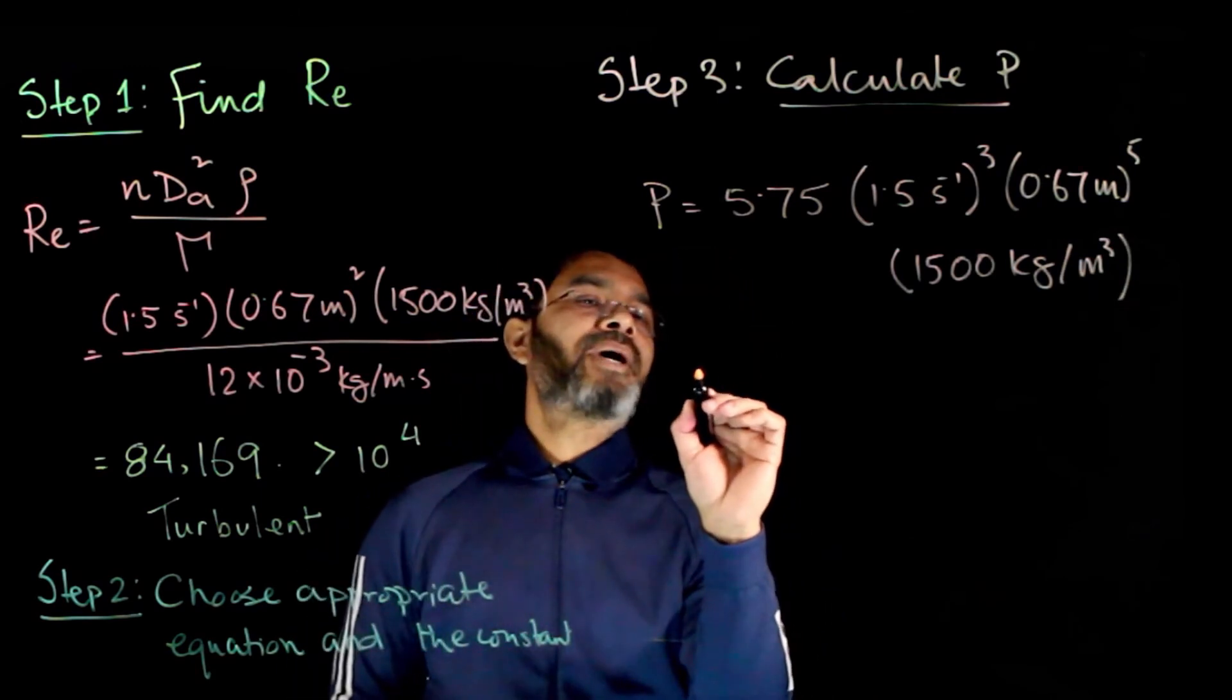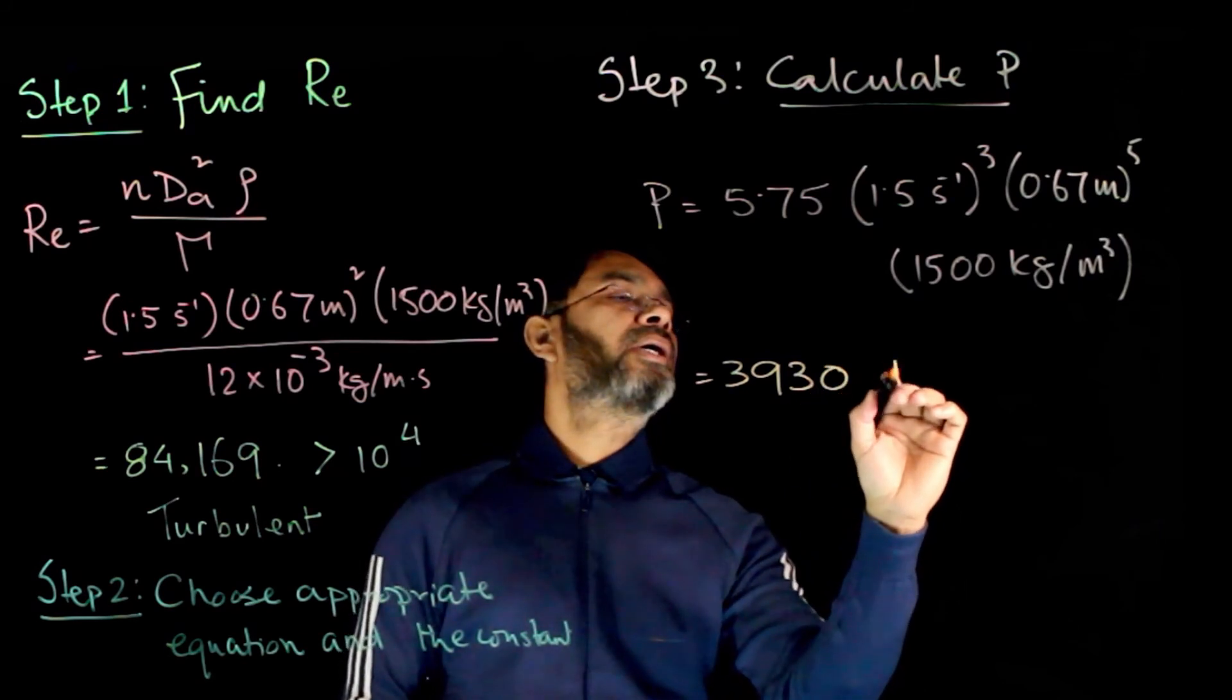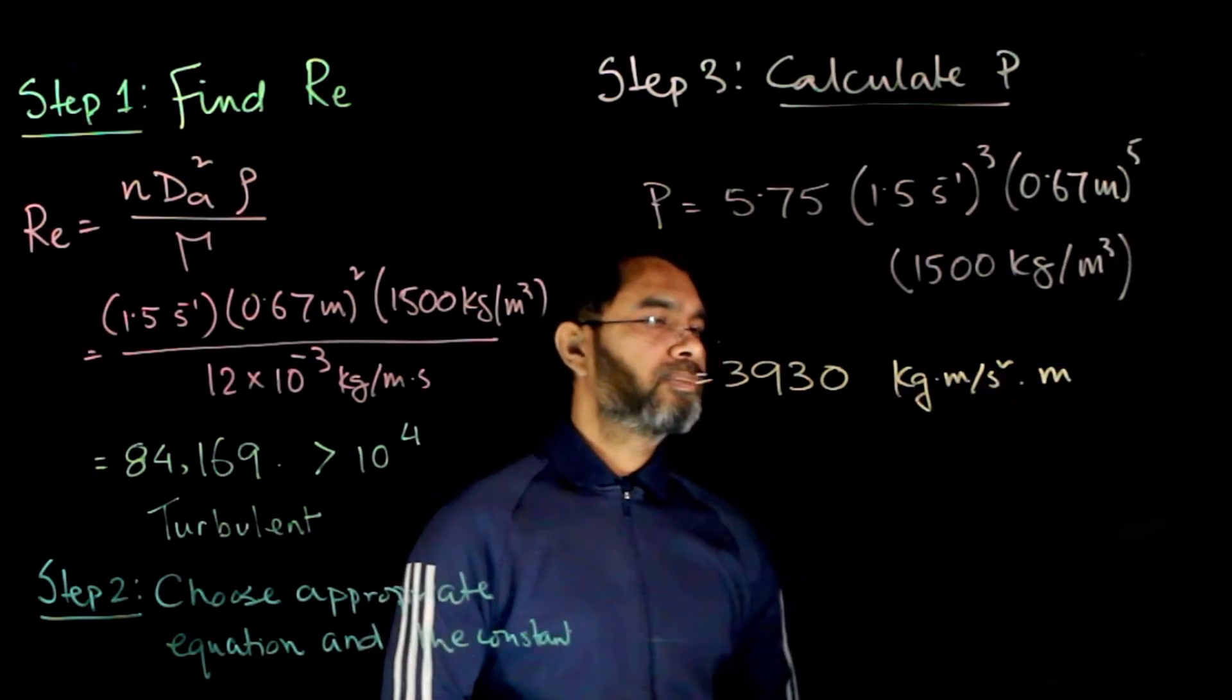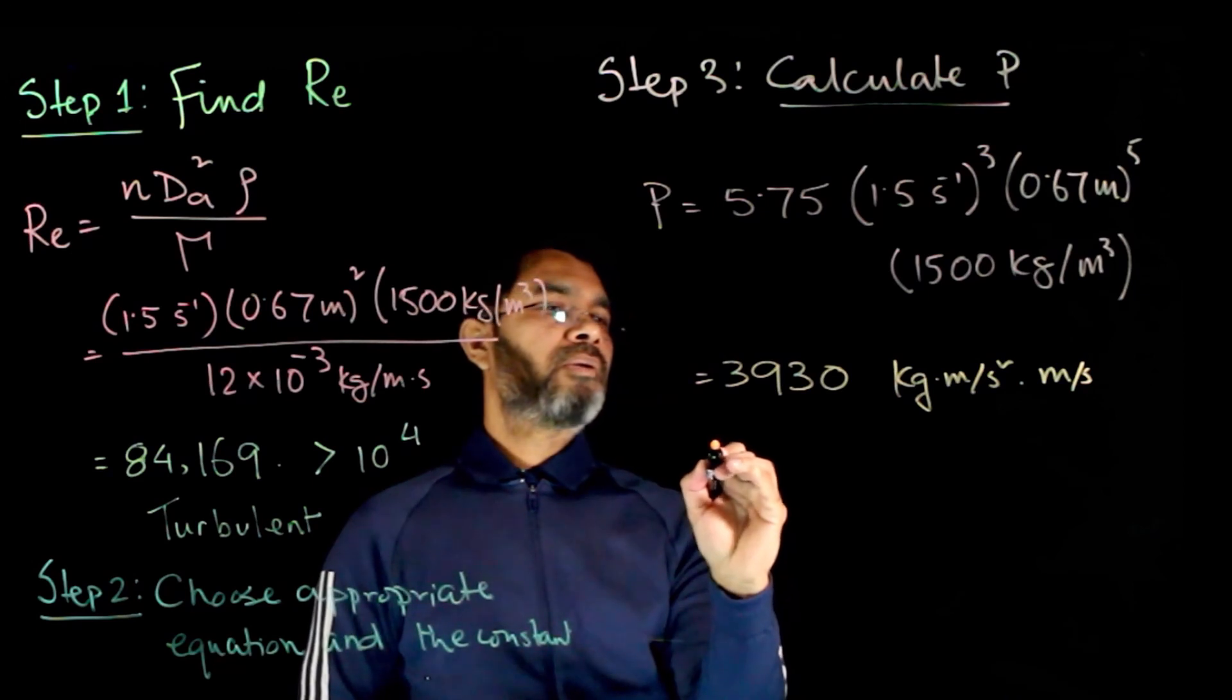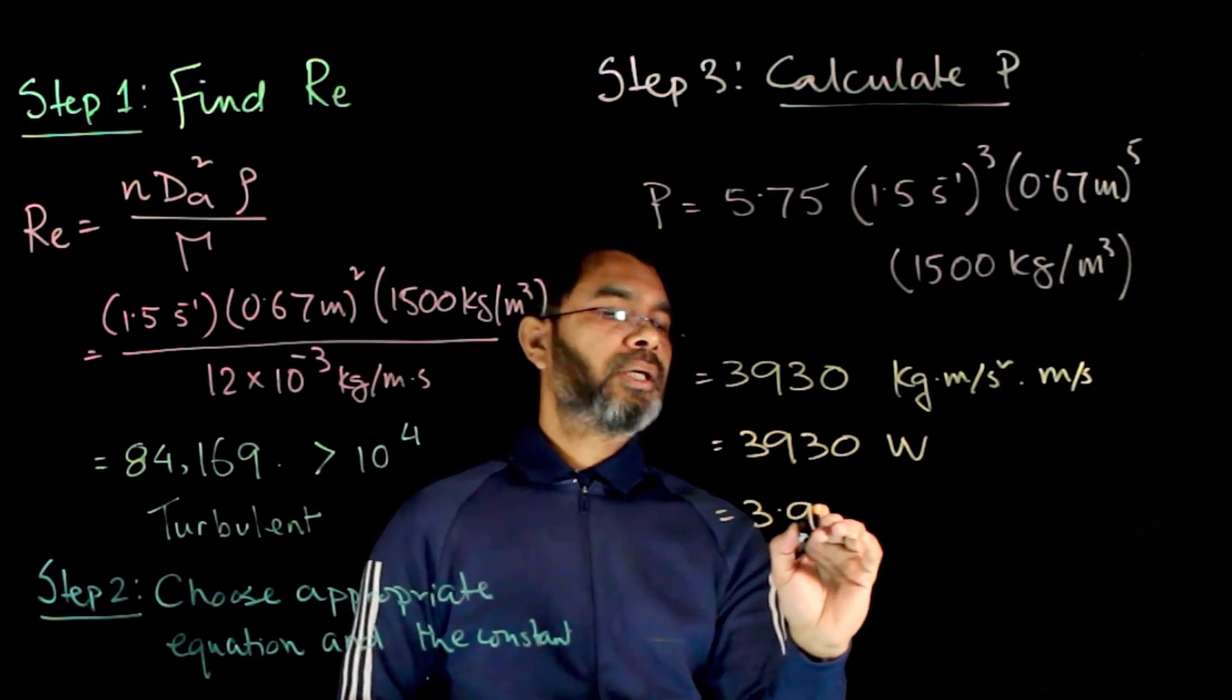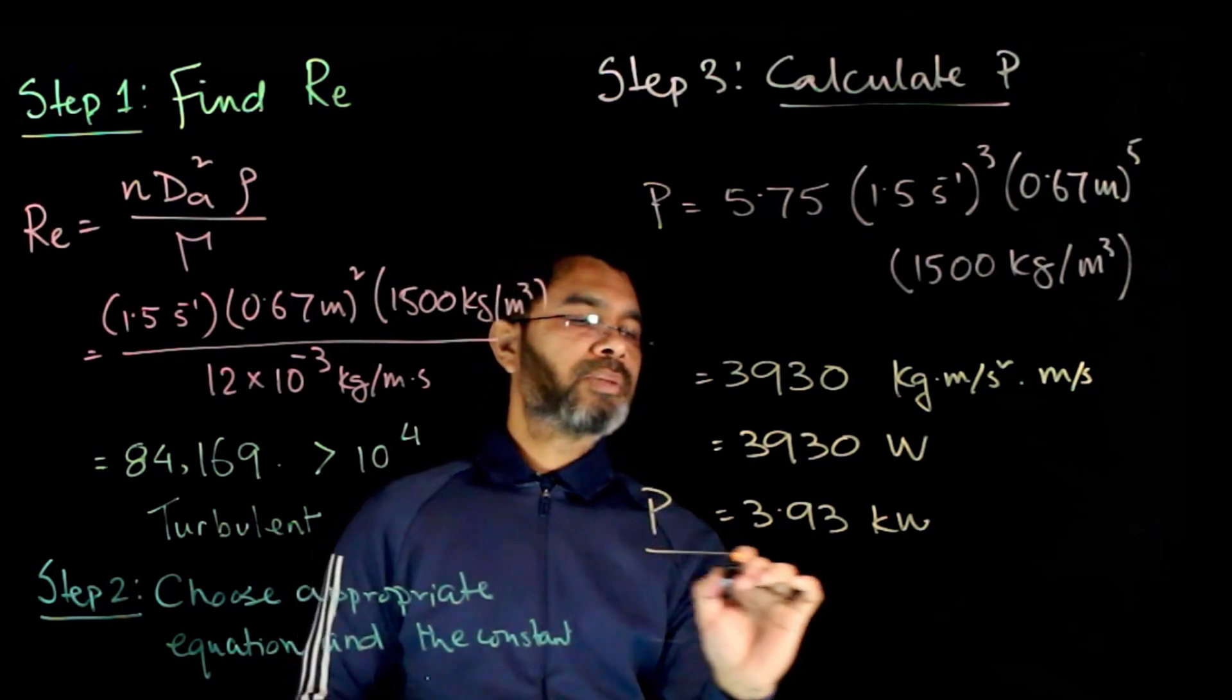Simply do this math. We'll end up with 3930 kg·m²/s³, which gives you 3930 watts, or 3.93 kilowatts. That's the power requirement for this process.